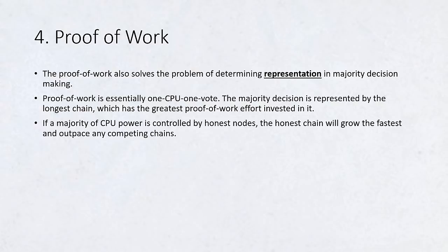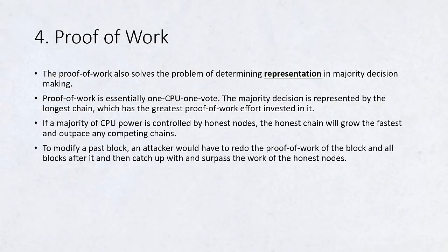If a majority of CPU power is controlled by honest nodes, the honest chain will grow the fastest and outpace any competing chains. To modify a past block, an attacker would have to redo the proof-of-work of the block and all blocks after it and then catch up with and surpass the work of the honest nodes. We will show later that the probability of a slower attacker catching up diminishes exponentially as subsequent blocks are added.